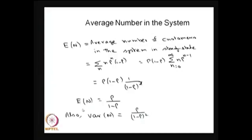Other than the stationary distribution, one can find out the average measures in the system. Suppose we define E[n], that is the average number of customers in the system in steady state. Since we know the probability distribution, we substitute pi_n here; therefore, the summation of n times pi_n over all n gives the average number of customers in the system.